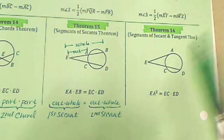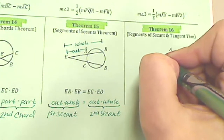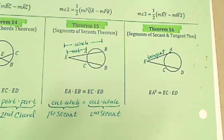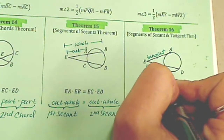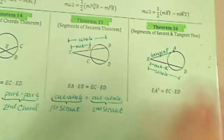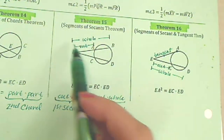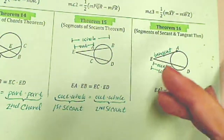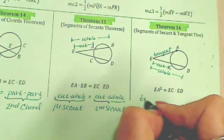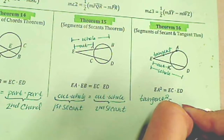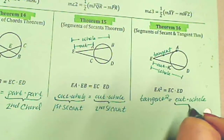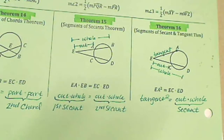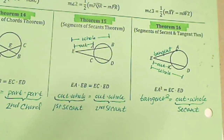For theorem 16, we have a tangent and a secant. With the secant I still have my outside times whole thing. Theorems 15 and 16 kind of go together because it's outside times whole thing — but on the tangent, the outside and the whole thing are the same because all of it is on the outside. So theorem 16 is: tangent squared equals outside times whole thing, where the outside times whole thing applies to the secant.